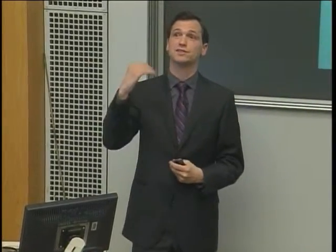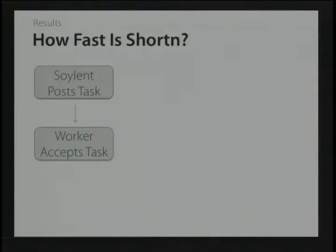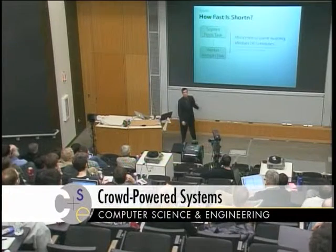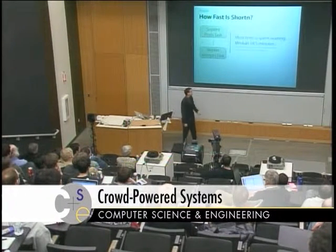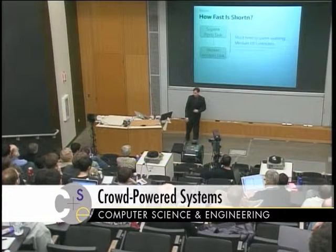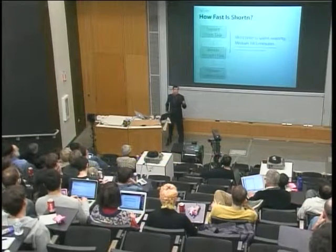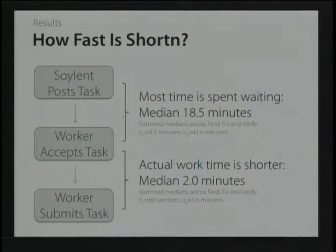How long does this take? There are two types of wait time. The first is the length of time between when Soylent asks for help and when a worker accepts. Summing the median Find, Fix, and Verify, we get about 20 minutes. In the second half of the talk, I'll show how we can take that 20 minutes and get it down to two seconds. The work time — between when a worker says they'll work on something and when they complete it — is about two minutes. So in the limit, you could expect results from Soylent in around two minutes.